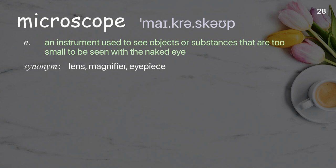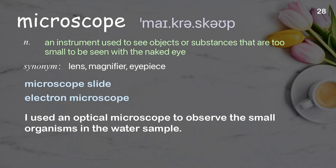Microscope: An instrument used to see objects or substances that are too small to be seen with the naked eye. Examples: Microscope slide. Electron microscope. I used an optical microscope to observe the small organisms in the water sample.